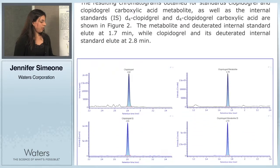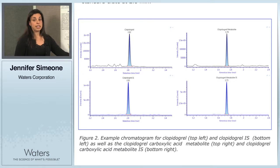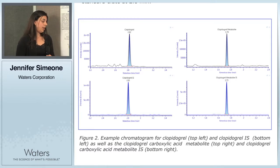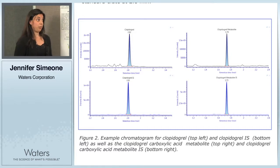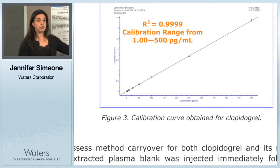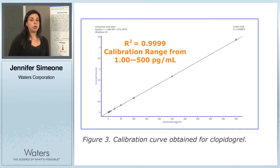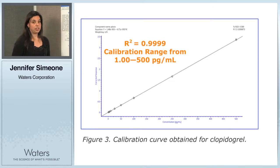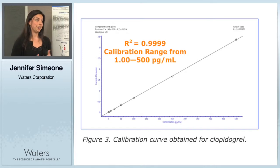This chromatogram shows the resulting peaks for both Clopidogrel and its inactive metabolite, as well as the deuterated internal standard for each. Clopidogrel elutes at 2.8 minutes, while the metabolite elutes at 1.7 minutes. The calibration range was 1 to 500 picograms per mil, and this was linear using a 1/x linear regression with an R-squared value of 0.9999, which is very good.